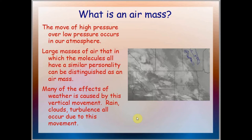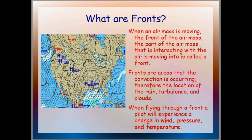What is an air mass? The movement of high pressure over low pressure occurs in our atmosphere. Large masses of air in which all the molecules have a similar 'personality' can be distinguished as an air mass. Many of the effects of weather — rain, clouds, turbulence — are caused by this vertical movement. There are giant statewide masses of slightly hotter air and giant quantities of cooler air, and as they interact, that's what causes rain, clouds, and wind. It is a movement of higher pressure air over lower pressure air, and how they interact are the fronts — that is the front of a moving air mass.